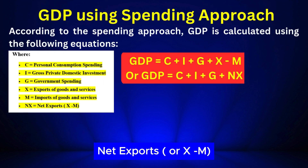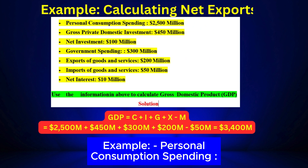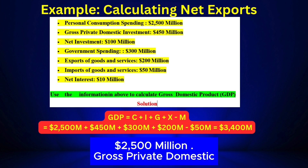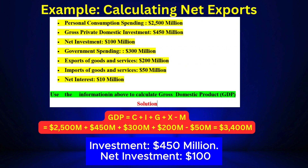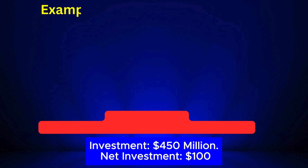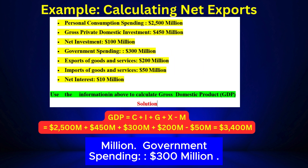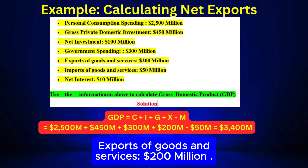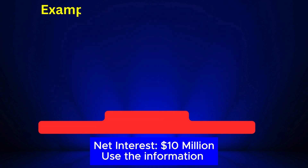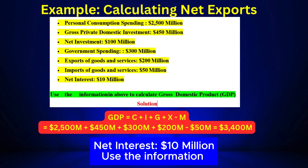Example: Personal consumption spending = $2,500 million. Gross private domestic investment = $450 million. Net investment = $100 million. Government spending = $300 million. Exports of goods and services = $200 million. Imports of goods and services = $50 million. Net interest = $10 million. Use this information to calculate gross domestic product.